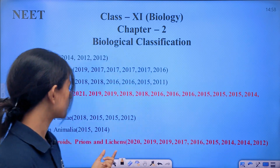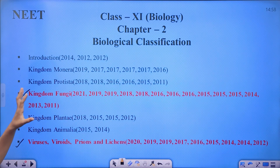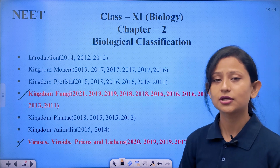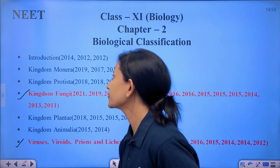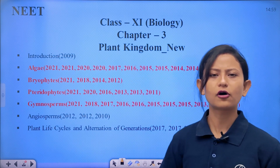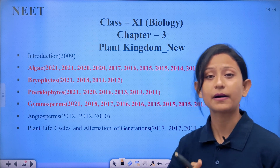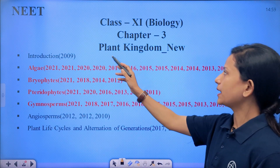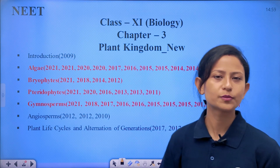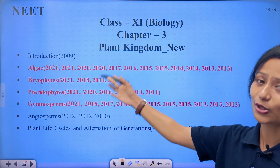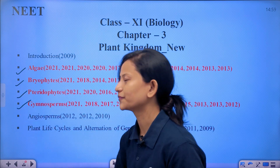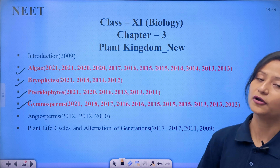Kingdom Fungi and viruses, prions, and lichens are important topics from a NEET point of view — many questions come from these. We have to be very, very conscious and well prepared. Next, Plant Kingdom: the important topics from a NEET point of view include algae, bryophytes, pteridophytes, and gymnosperms.